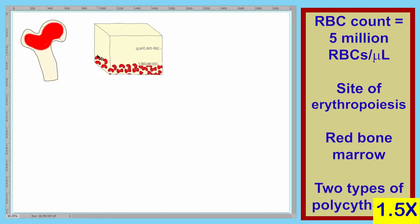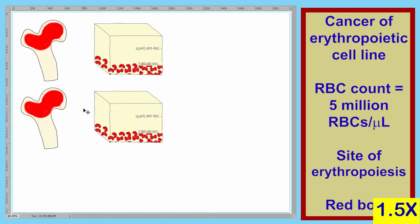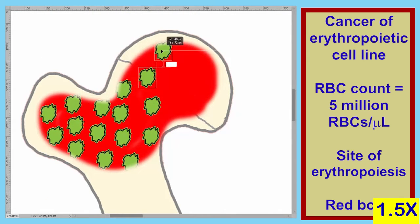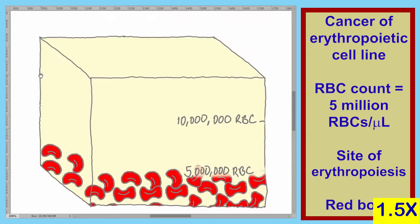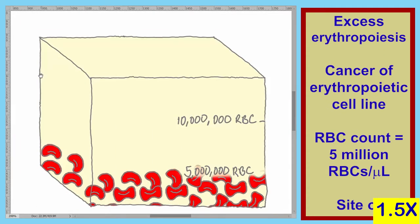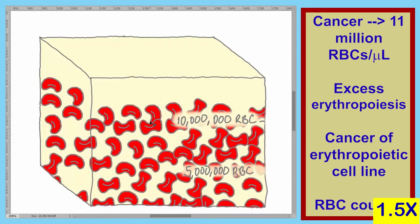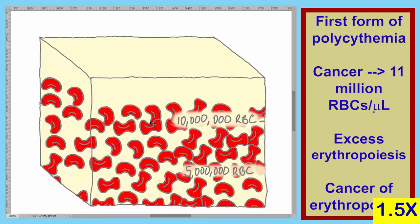Let's discuss our first form of polycythemia. In the first form of polycythemia, there's a cancer of the erythropoietic cell line. These cancer cells lead to excess erythropoiesis and an elevated RBC count. This RBC count can be as high as 11 million red blood cells per microliter, and this is the first form of polycythemia.